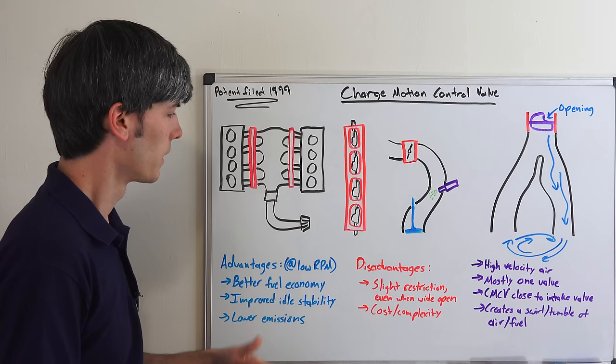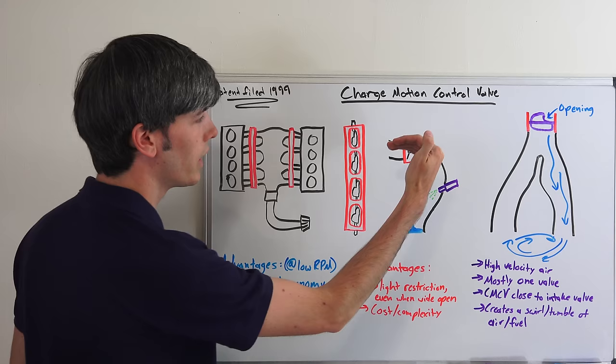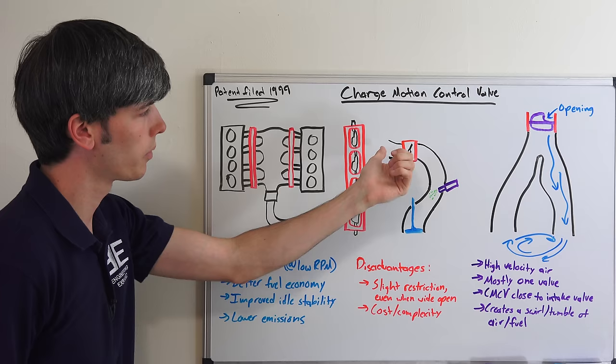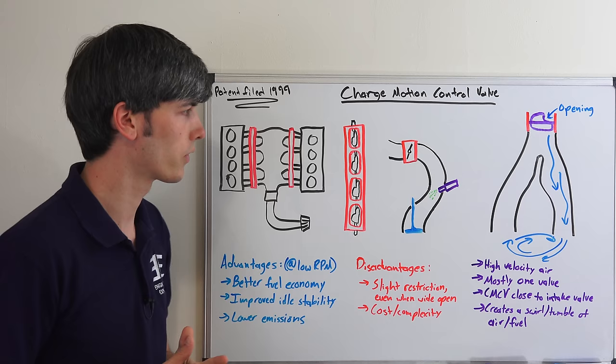Disadvantage however, moving into when you do get on full throttle, you're still going to have this, and even though it's going to be wide open and not much restriction, there is still going to be a slight restriction there in airflow. You know, not a huge deal, obviously Ford has compensated for it, and the engine's plenty powerful, 435 horsepower I believe.